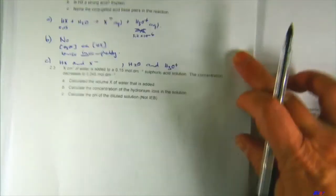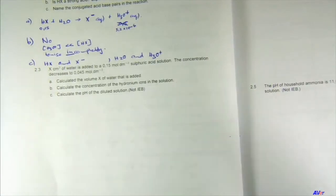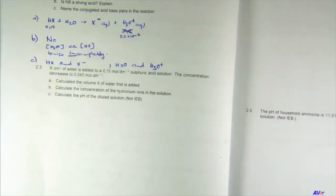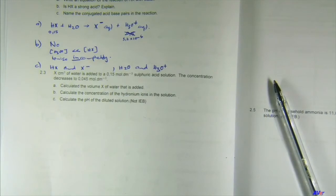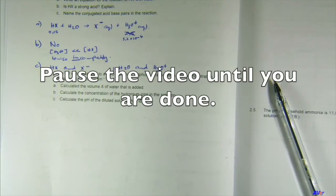Let's work on question 2.3 on page 24. Quickly — a show of hands: who is in IAB? You don't do pH calculations, so just do up to part b; skip part c.